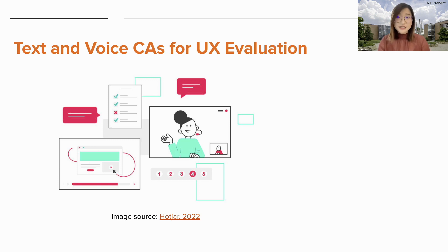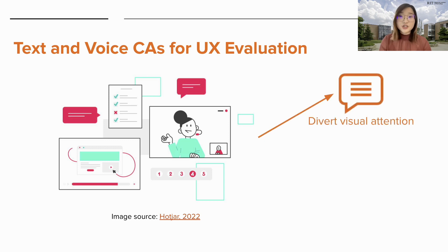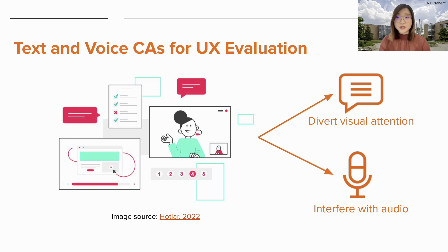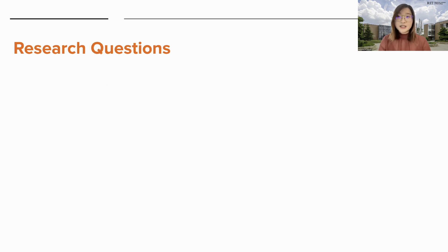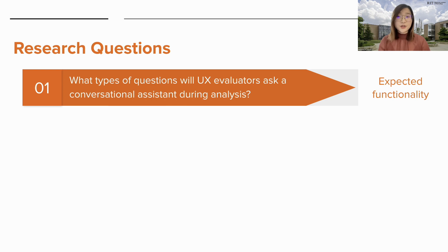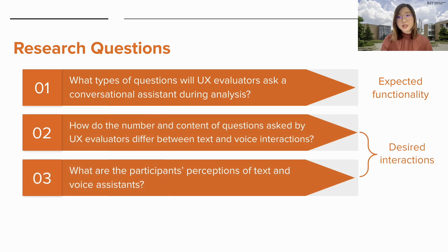There are some inherent task constraints that set UX evaluation apart from other use cases. For example, while evaluators are focused on reviewing usability recordings, text responses might distract their attention away from the video, or voice responses might interfere with the audio of the user's speech. Thus, in this research, we take the first step towards determining the expected functionality and desired interactions with a conversational assistant for UX analysis. We investigated what types of questions UX evaluators will ask, how the number and content of questions differ between text and voice interactions, and what their perceptions of text and voice assistants are.